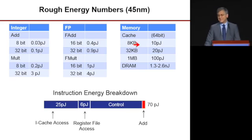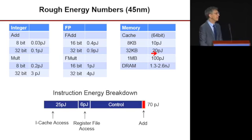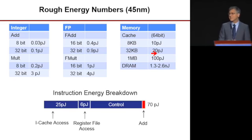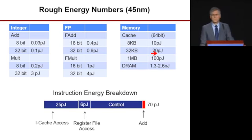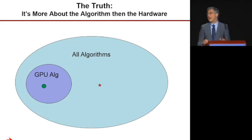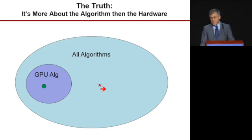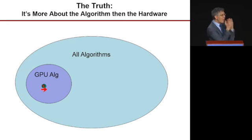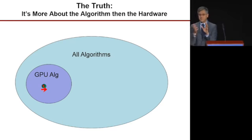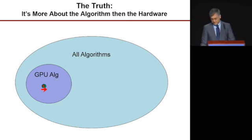The truth about specialization is that it's not just about the hardware trick — first you have to move your algorithm from the space of all possible algorithms into a much more restricted space. You want to move it to the GPU, which is data parallel if you can, but what you really want is to move it to a sweet spot that has no external communication, is very intensive in arithmetic, and those arithmetics are actually integers, not floating point.